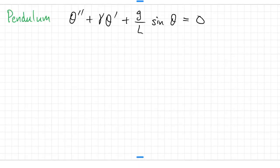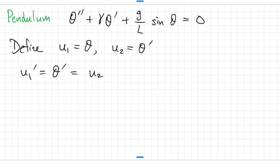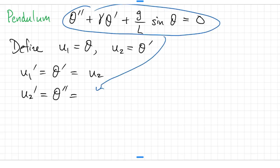Here's our pendulum equation again. So I'll define u1 as theta and u2 as theta prime. u1 prime is theta prime, by definition that's u2. u2 prime is theta double prime, and that we can fill in using the original differential equation by solving for theta double prime. That's negative gamma theta prime minus g over l sine theta. And then we convert those into u's.